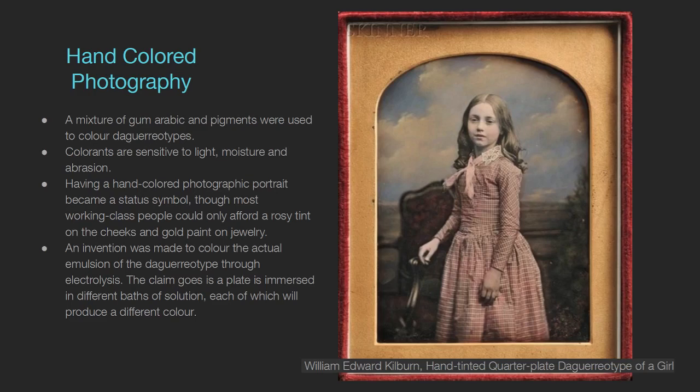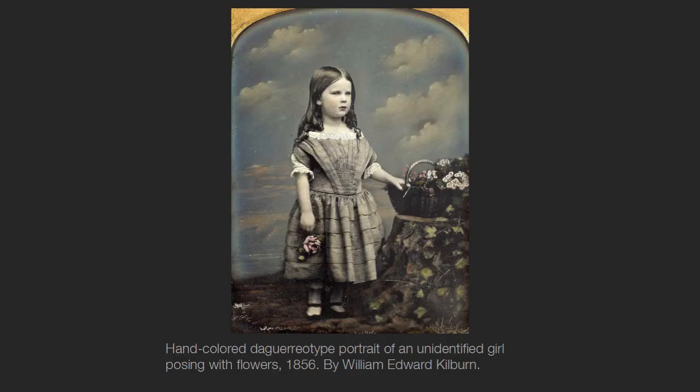It was also kind of a status symbol — having a fully painted daguerreotype was very fancy in the late 18th to early 19th century. They did create a way to make color through electrolysis: you would put the plates in different baths of solution and they would produce different colors, automating a process that could otherwise be labor-intensive.